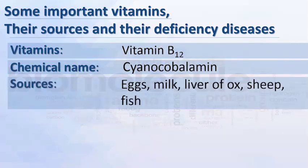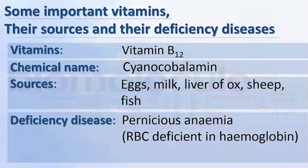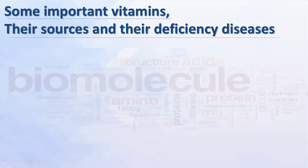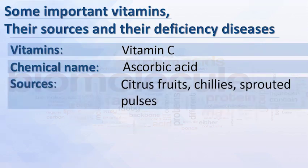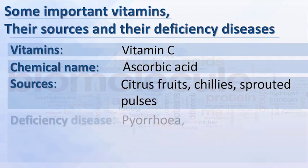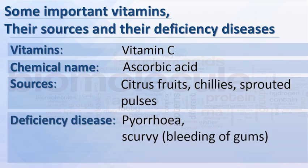Vitamin B12 (cyanocobalamin) sources include eggs, milk, and liver of ox, sheep, and fish. Deficiency causes pernicious anemia and RBC deficiency in hemoglobin. Vitamin C: chemical name ascorbic acid; sources include citrus fruits, chillies, and sprouted pulses. Deficiency causes pyorrhea and scurvy disease, including bleeding of gums.